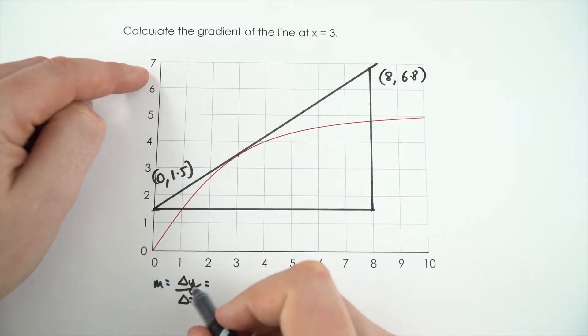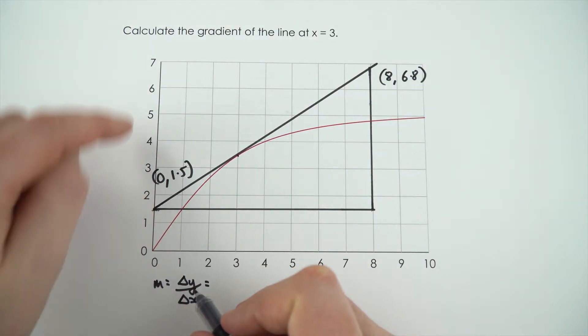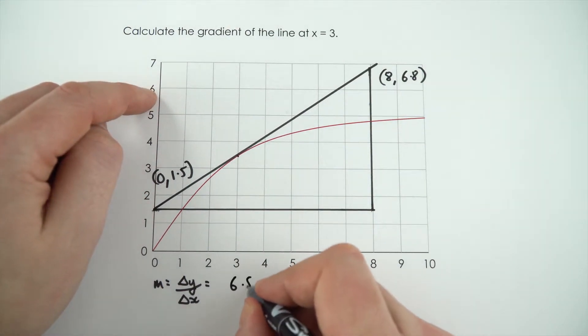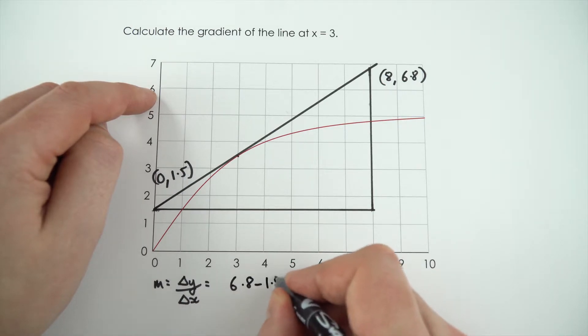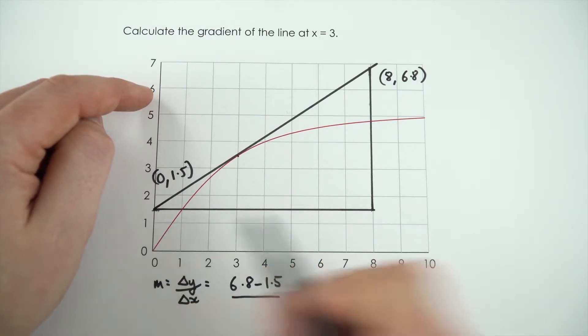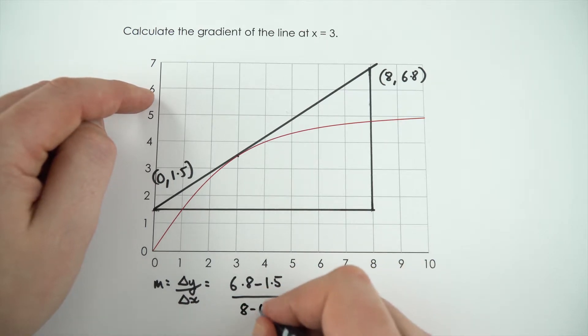OK. So the change in y value, well it goes from 1.5 to 6.8. So that's 6.8 take away 1.5. The change in x value is from 0 to 8, 8 minus 0.